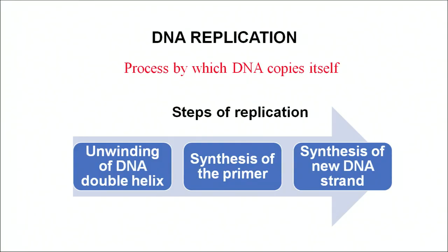This DNA replication is semi-conservative in nature. Semi-conservative means that DNA is made up of two strands, and those two strands are anti-parallel to each other. One strand can be used as a template, and based on that template strand, the complementary strand can be built up. Whenever the DNA replicates, the cell receives half DNA which is the older one and half newly synthesized.